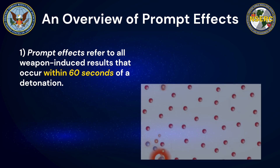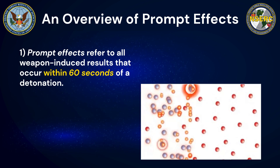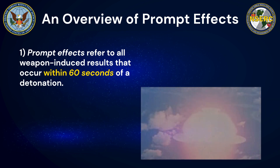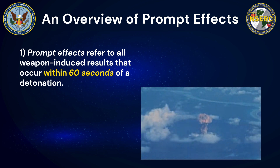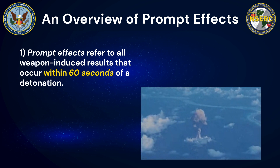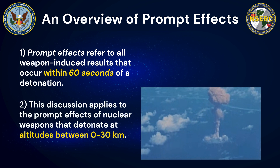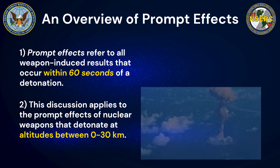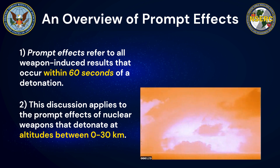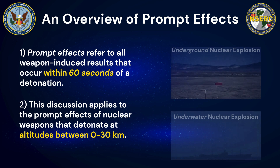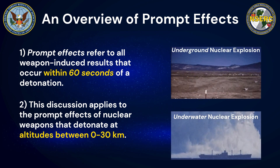The term 'prompt' refers to a brief time span beginning at the moment a nuclear weapon begins to detonate, and it typically applies to all weapon-induced effects that occur within the first 60 seconds. As such, the prompt effects of nuclear weapons are considered separate from the residual effects, which are much longer lasting and will be described in later presentations. This discussion focuses on nuclear weapon explosions that occur at or relatively close to the surface of the Earth — from altitudes of sea level up to around 30 kilometers or 100,000 feet — since both prompt and residual effects change significantly at higher altitudes or beneath land and sea surfaces.